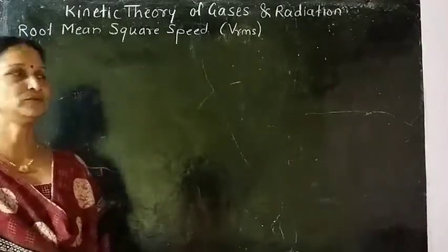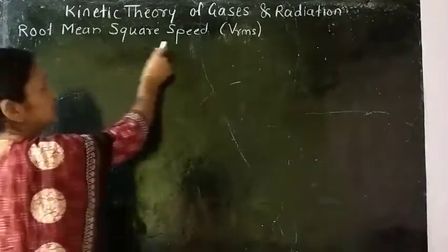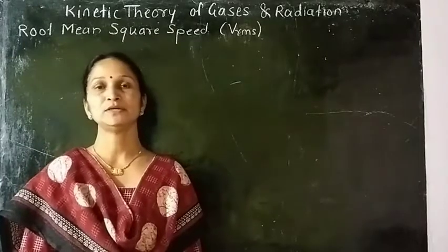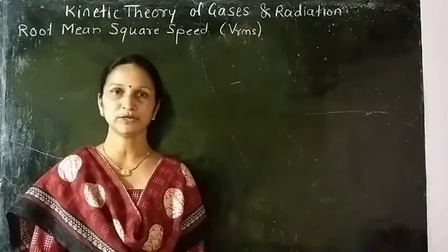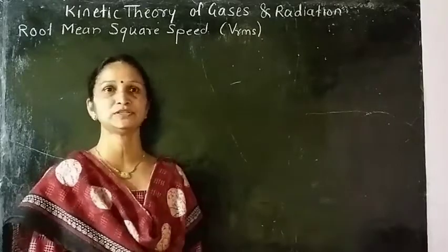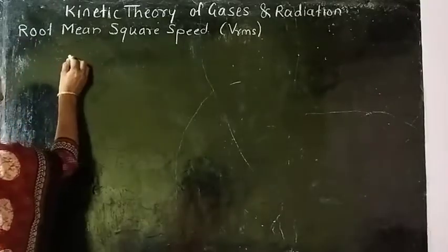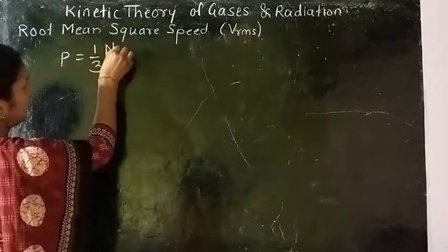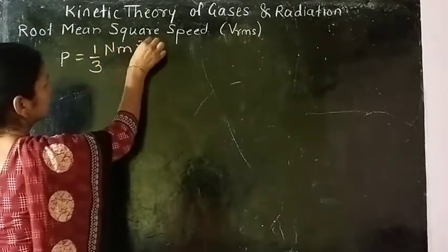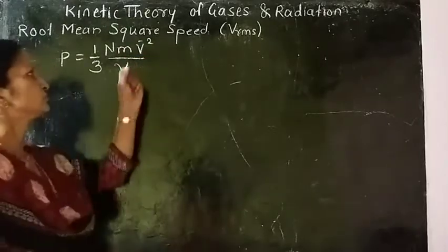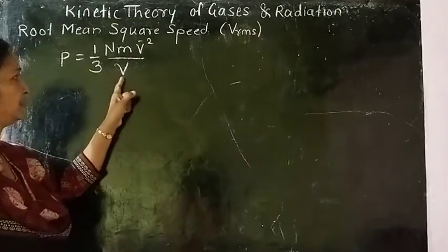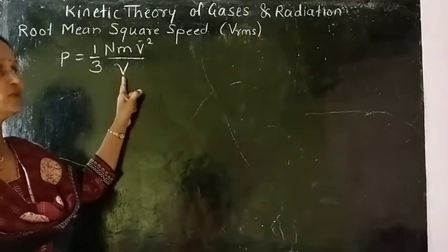Today we are going to see root mean square velocity — root mean square speed of gas molecules. We have seen the pressure equation, that means the expression for pressure exerted by molecules of gas. It is P = (1/3) × n × m × v² divided by capital V, where small v is the velocity of gas and capital V is the volume of gas.